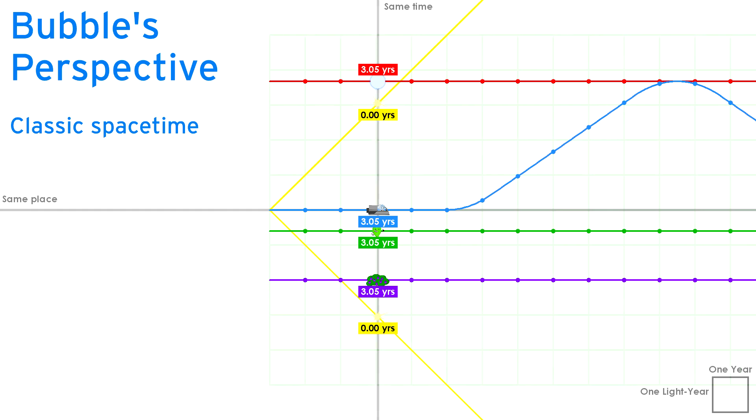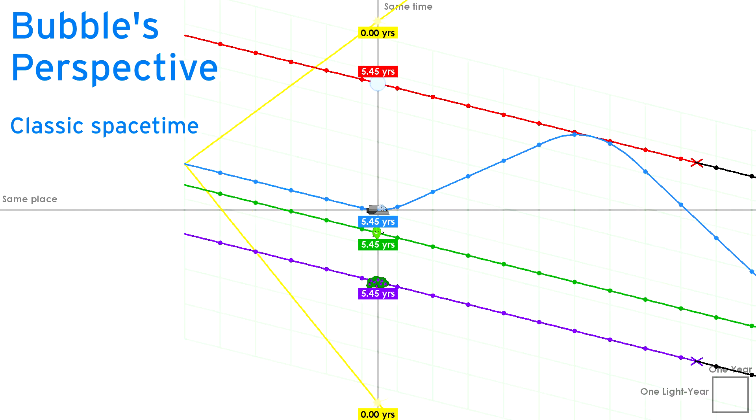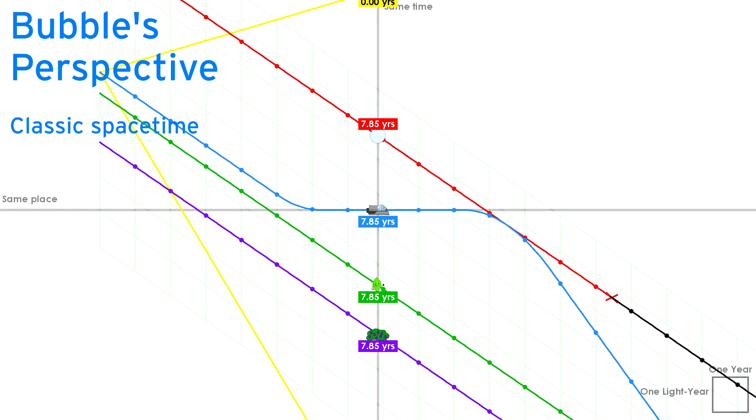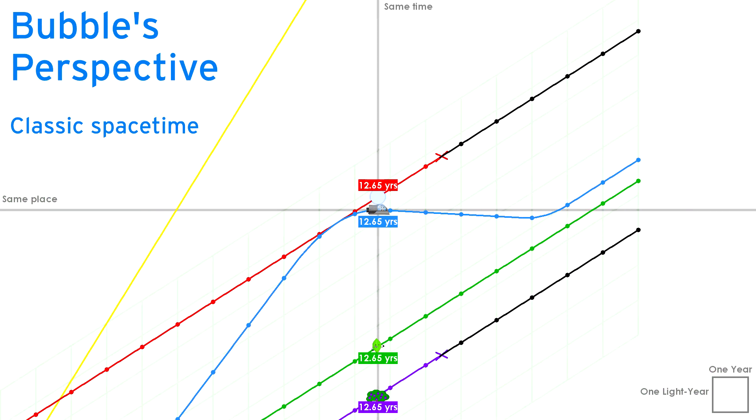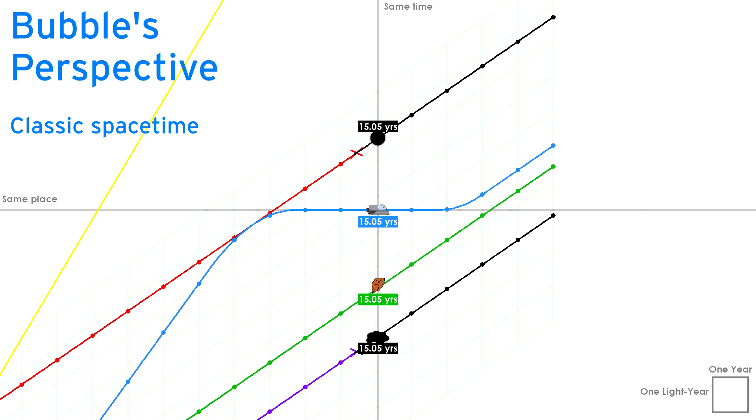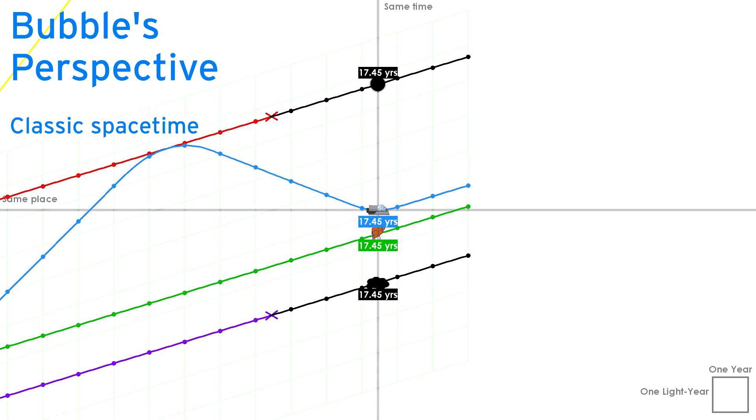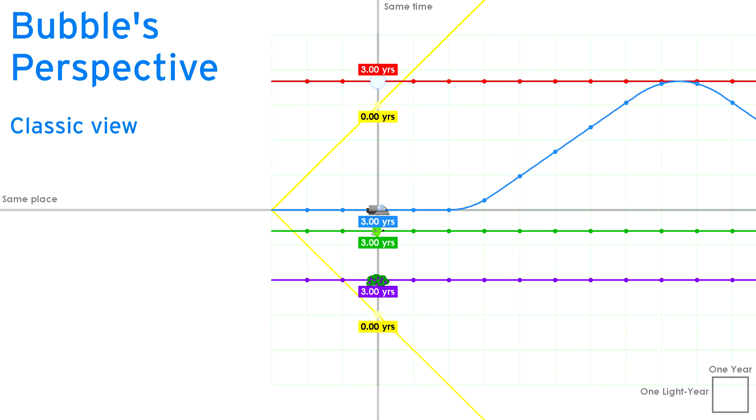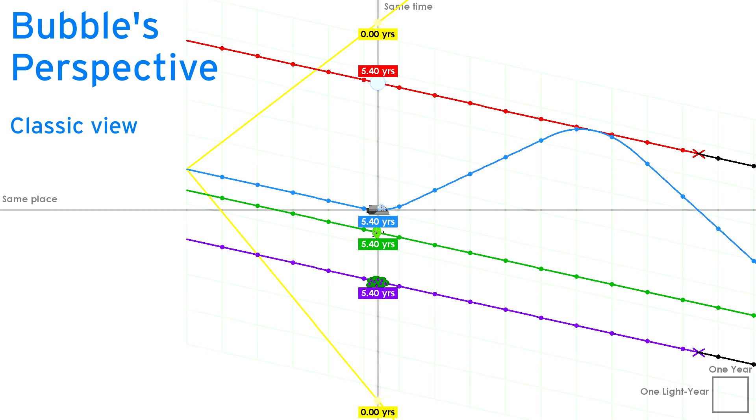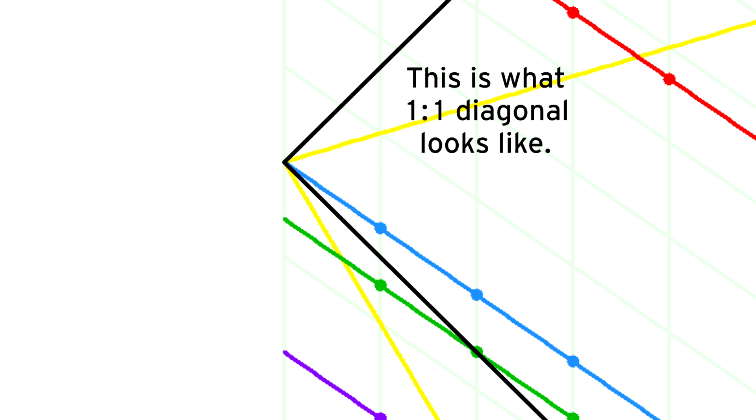Under the classic view of space and time, we'd see this. Notice that vertical lines, meaning things happening at the same time, stay vertical, which means that there is no time distortion whatsoever. Therefore, Bubble ends up the same age as Leafy, 20 years old. However, one glaring error makes this view incorrect. The rays of light aren't perfectly one-to-one diagonal. That means the rule that the speed of light is the same for all observers was broken. This view of space-time must be wrong.